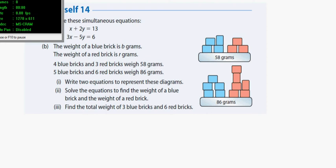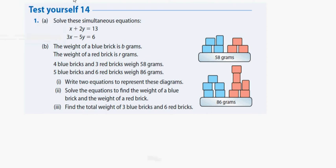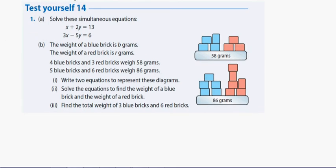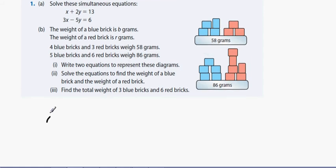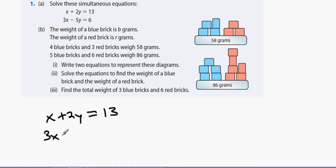This is Test Yourself 14 on simultaneous equations. The first question is to solve these simultaneous equations: x plus 2y equals 13, and 3x minus 5y equals 6.